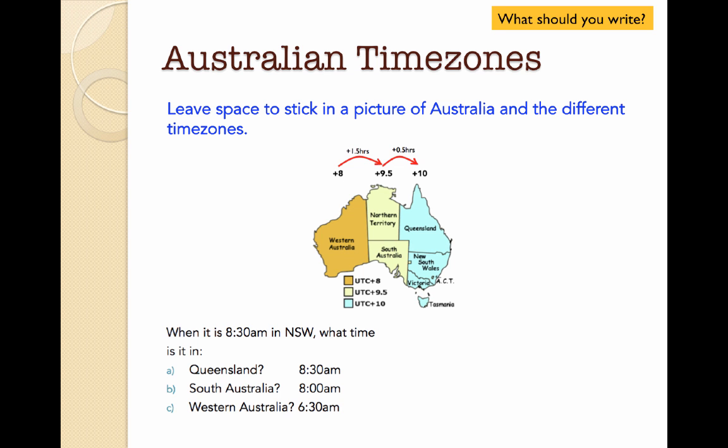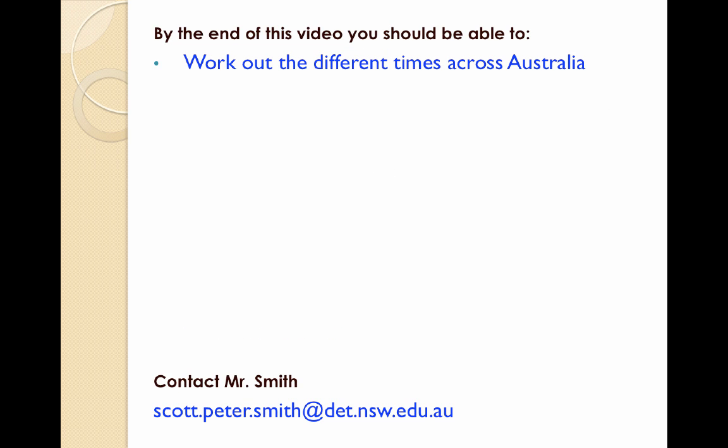What should you do now? Write down the heading 'Australian Time Zones' and leave a space, because I'm going to give you a picture in class. Then write down the questions we went through as well as the answers we got. Hopefully you can now work out the different times across Australia, and if you have any questions you can always ask them in class. Good luck.